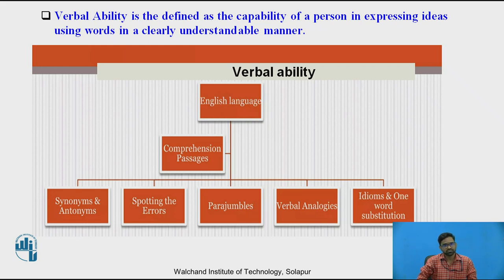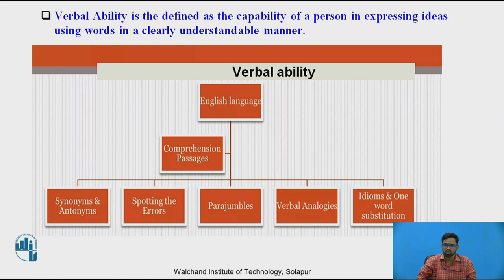Verbal ability is defined as the capacity of a person to express ideas using words in a clearly understandable manner. Under verbal ability in the English language, we have numerous topics: reading comprehension, synonyms and antonyms, spotting the errors, para symbols, verbal analogs, idioms, one word substitution, and phrases. It is a verbal ability that defines the capacity of a person to express their views and thoughts in an understandable manner.